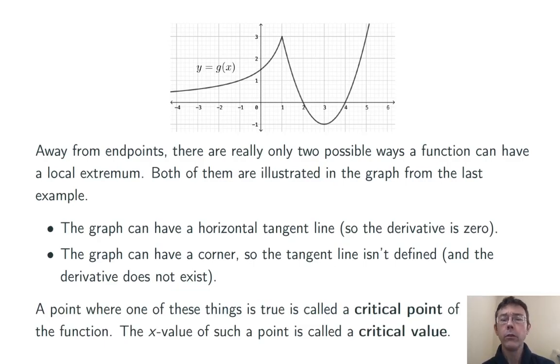A point where one of these two things is true is called a critical point of the function, and the x value of a critical point is called the critical value. You should think of critical points as candidates for local extrema.